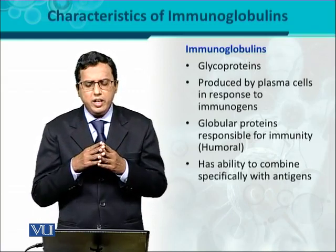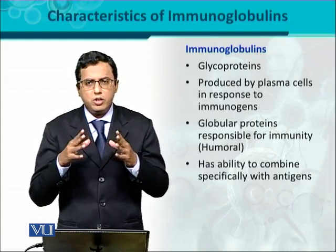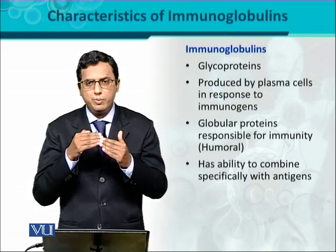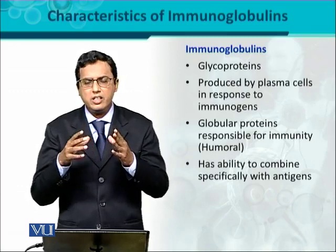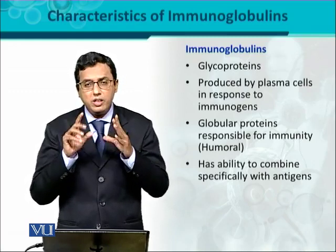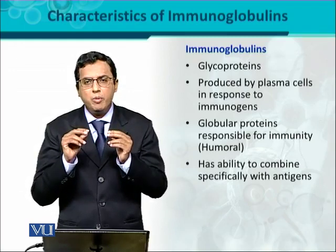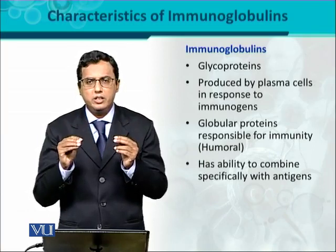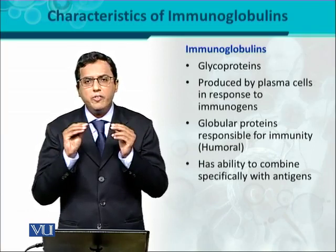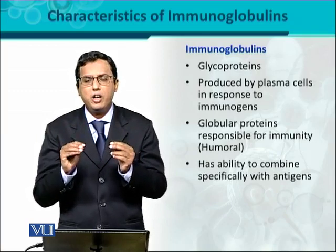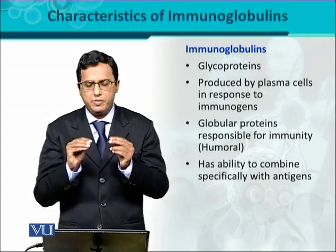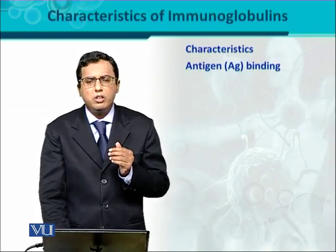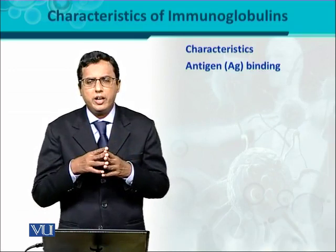Immunoglobulins have the ability to combine with the antigen specifically. Because they are produced in response to an antigen or immunogen, they will interact with that antigen specifically. So immunoglobulins are very specific to a certain antigen - there is no non-specificity here, because this is a part of the adaptive immune system or specific immune system.